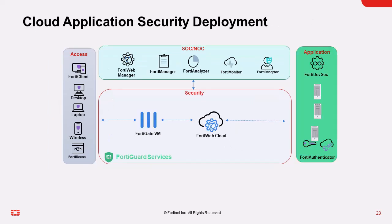For a cloud application security deployment, this is a simplified cloud deployment as all solutions are based on FortiNET cloud products. This deployment is based on a FortiGate VM and a FortiWeb cloud solution and still supports the application security landscape. These can be deployed in many options such as a hypervisor, public, or private cloud. This deployment maintains the FortiNET security solution strategy specific to cloud, and FortiGuard services are always available for additional security features.